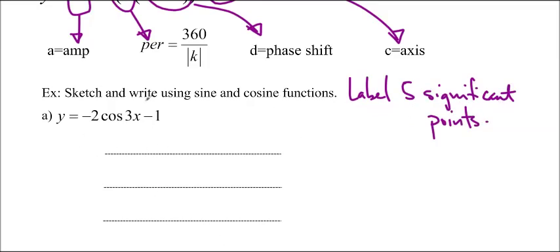So let's get started. I know my amplitude is equal to 2. My period is going to be 360 over 3, which is 120 degrees. And I know my axis is y equals negative 1. You'll notice I've actually drawn three lines here. This is going to be my maximum, my axis, and my minimum.